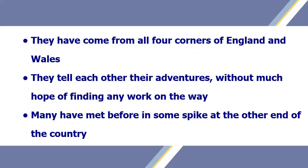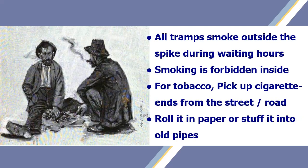They have come from all four corners of England and Wales and tell each other their adventures without much hope of finding any work on the way. Many have met before in some spike at the other end of the country. All the tramps smoke outside the spike during waiting hours because smoking is forbidden inside. Their tobacco consists mainly of cigarette ends which they pick up in the streets and roads, rolled in paper or stuffed into old pipes.